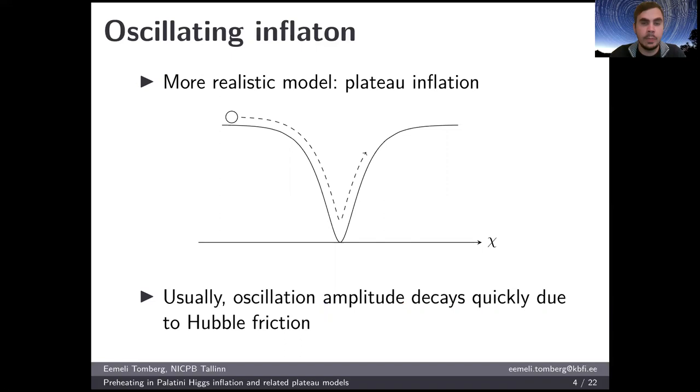Now, a maybe more realistic model, which fits better the CMB Planck data, would be a model of plateau inflation. Here the slow roll inflation happens on a flat section of the potential, but eventually the inflaton field still reaches a minimum and starts to oscillate there. Usually the oscillation amplitude decays very quickly due to this Hubble friction, so that after only a few oscillations, we can already approximate this potential as a polynomial. The analysis returns to this well-known form.